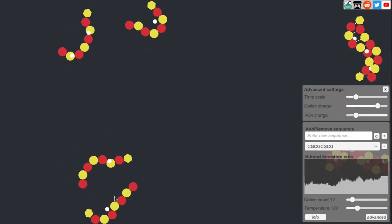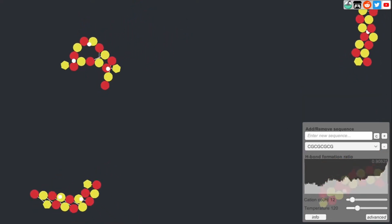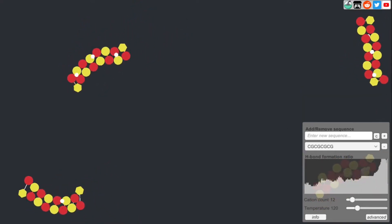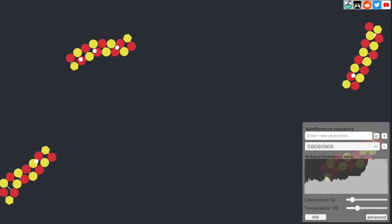Now you can see that they are forming double-stranded DNA, aka duplex. They are also held together by the help of the cations, and they are presented with small white circles.